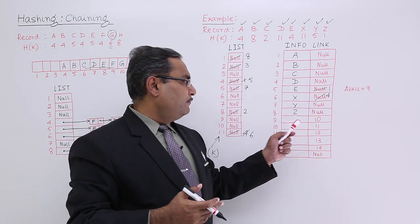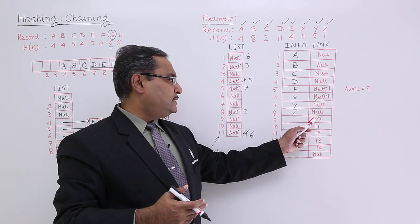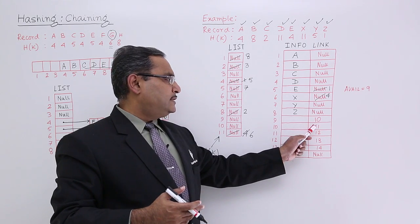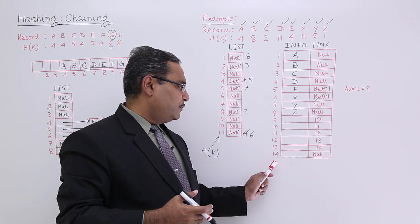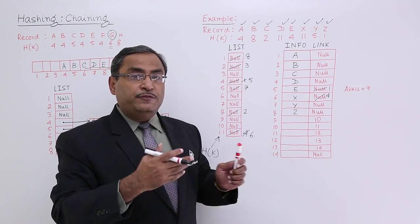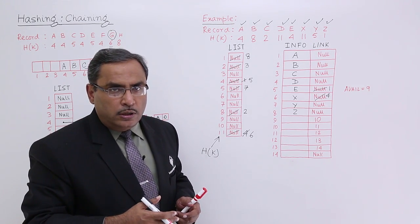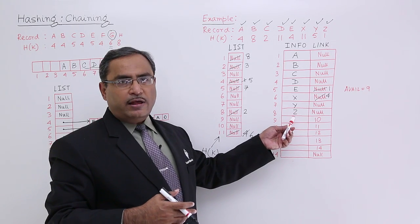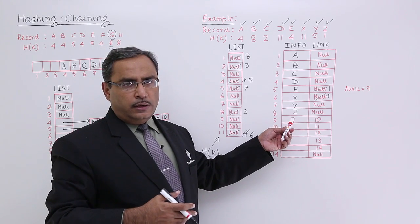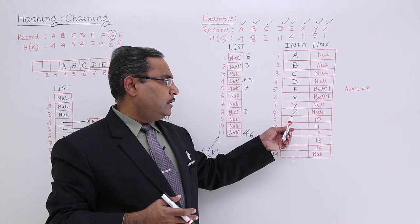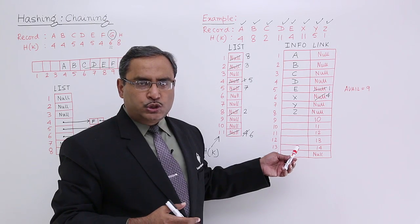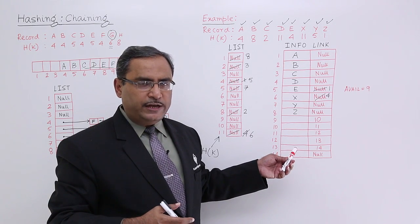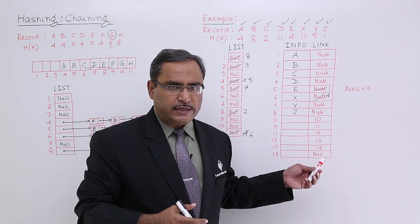And this is my avail list. It is starting from location number 9. The next will be 10, next link address will be 11, 12, 13, 14, and 14 is pointing to null. If we have any other new record, then you can take one node from this avail. I can put that one at the 9th location, and then the avail will be starting from 10. In this way, I am having some future scope for insertion of new records here.